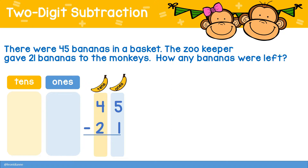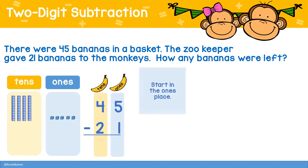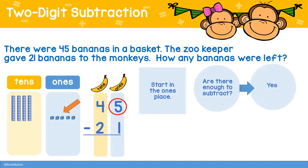Let's begin by modeling 45 using base 10 blocks — four tens and five ones. Start in the ones place. Are there enough ones to subtract? There are five ones and we need to subtract one. Yes, there are enough, so we subtract: five minus one is four.